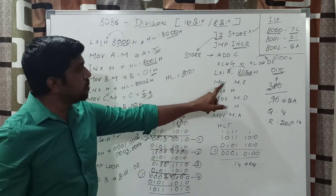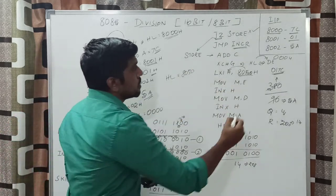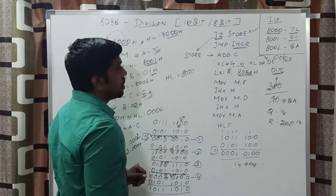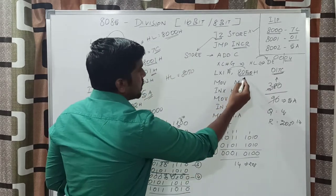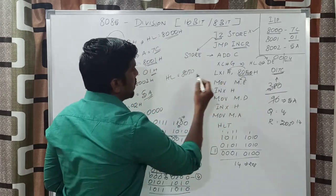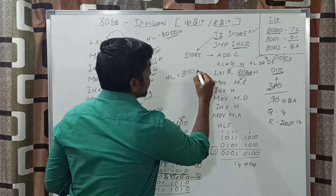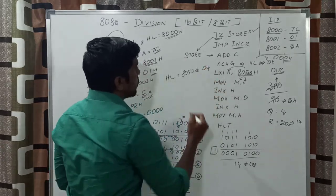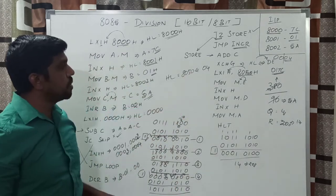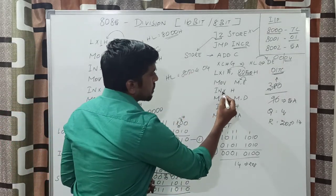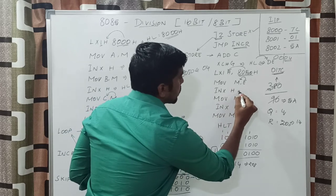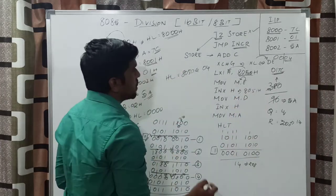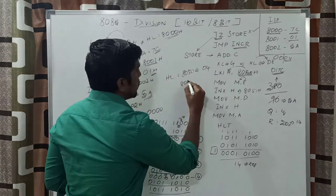The next instruction is MOV M, E. E is the lower 8-bit value of the DE pair — E content is 04h. After execution of this instruction, the E content is transferred to memory location 8050h. After execution, the result 04h is stored in memory location 8050h. The next instruction is INX H — the HL pair value becomes 8051h.